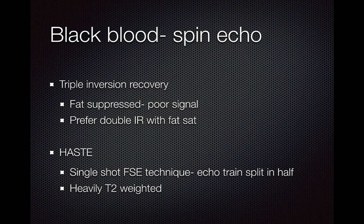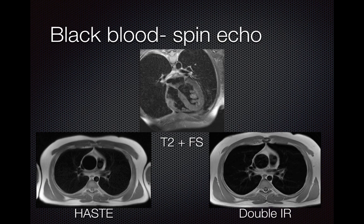HASTE images are a single-shot fast spin-echo technique — very fast. The echo train is split in half; basically you take two echo trains to get the entire set of k-space lines to create the black blood images. These are heavily T2-weighted due to the long echo train. Here we can see a selection of black blood images: the HASTE technique showing black blood very nicely, a T2-weighted image with chemical fat saturation showing some inhomogeneity but nice fat saturation around the heart, and a standard double IR.